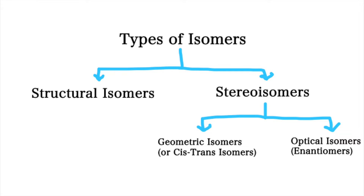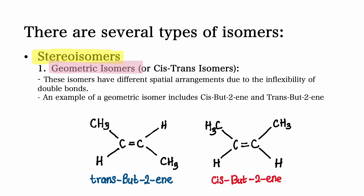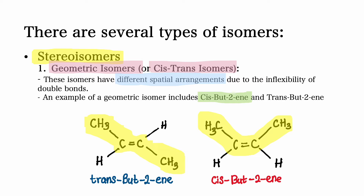Now let's talk about stereoisomers. There are two types of stereoisomers: geometric isomers and optical isomers. Geometric isomers, or cis-trans isomers, have different spatial arrangements due to the inflexibility of double bonds. In cis isomers, similar atoms or groups are on the same side of the double bond, whereas in trans isomers they are on the opposite sides. An example includes cis-but-2-ene and trans-but-2-ene.